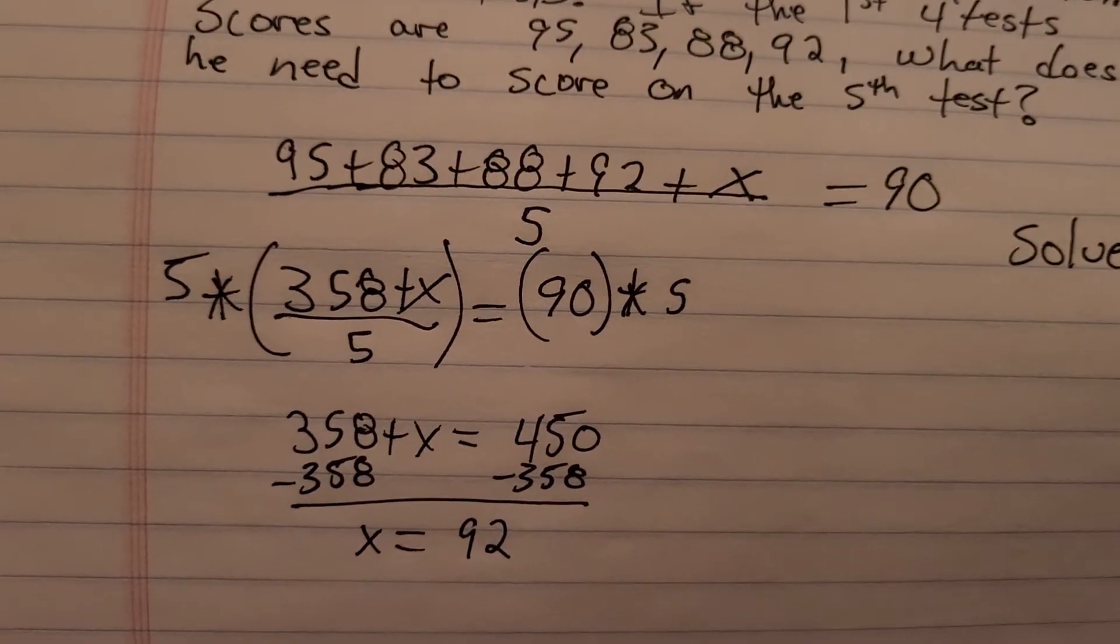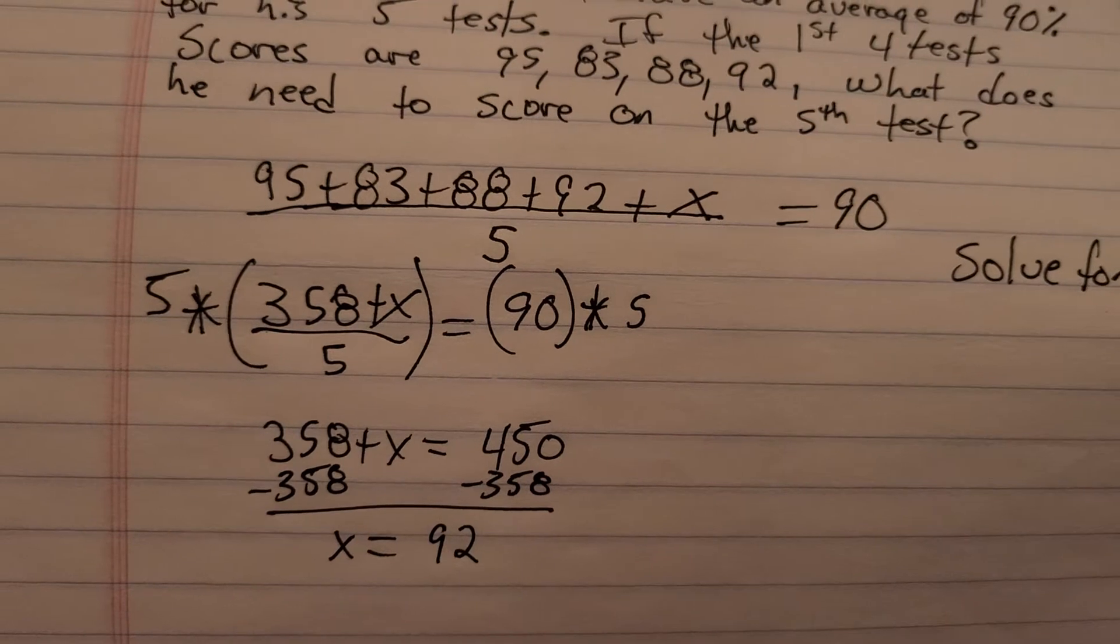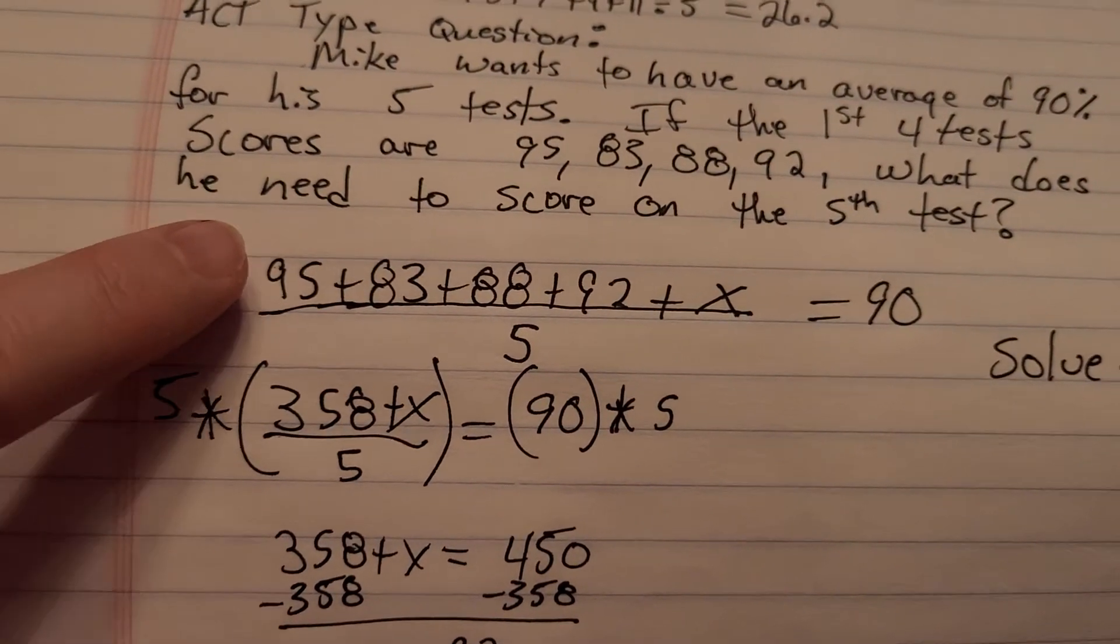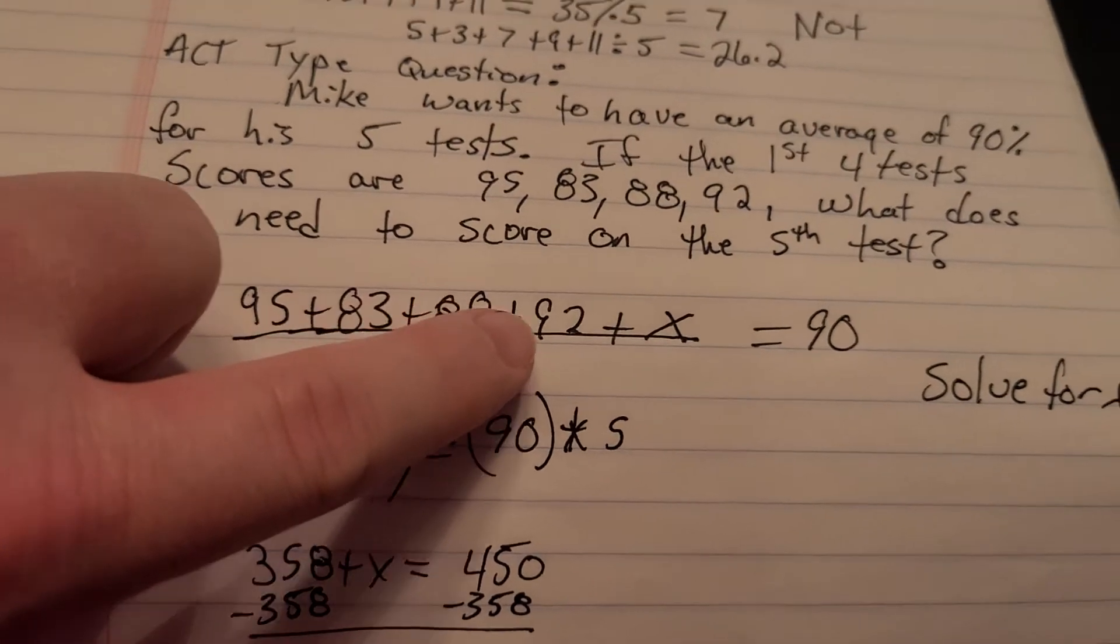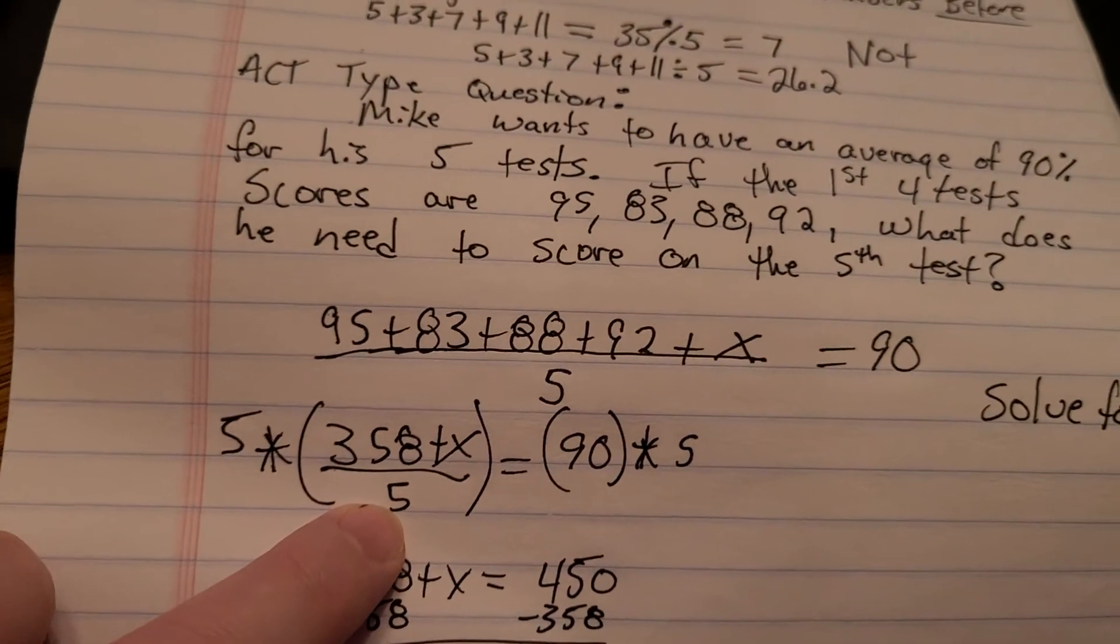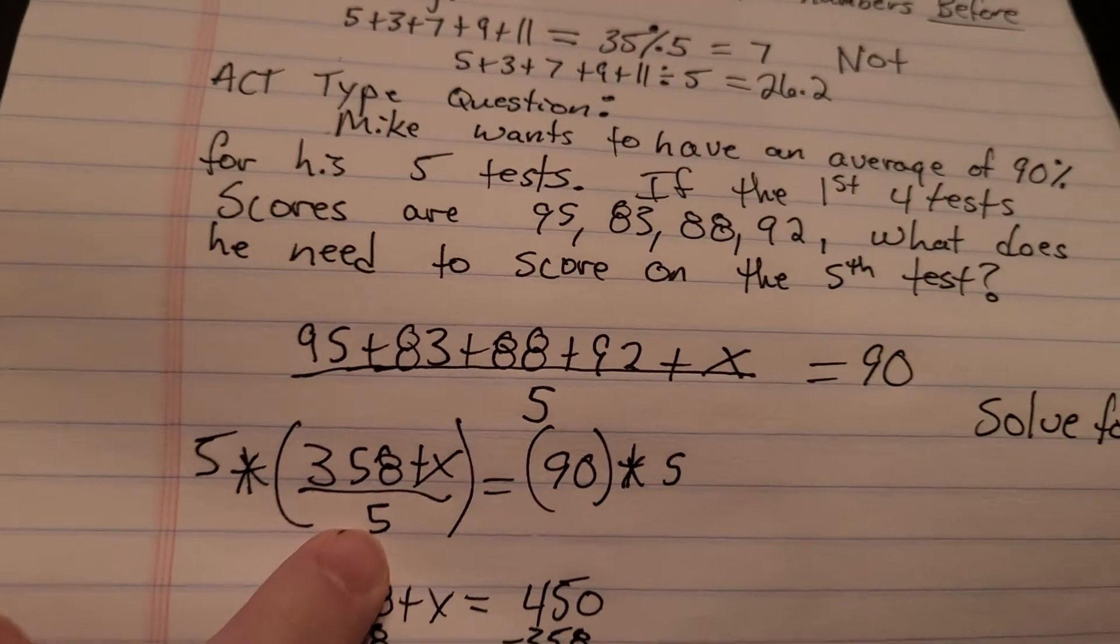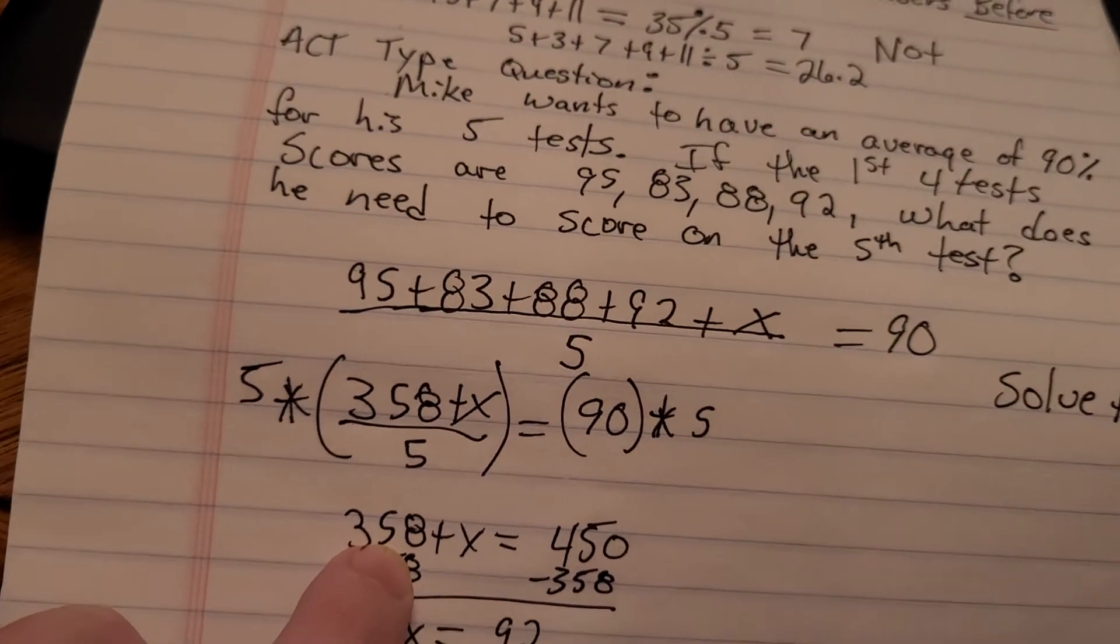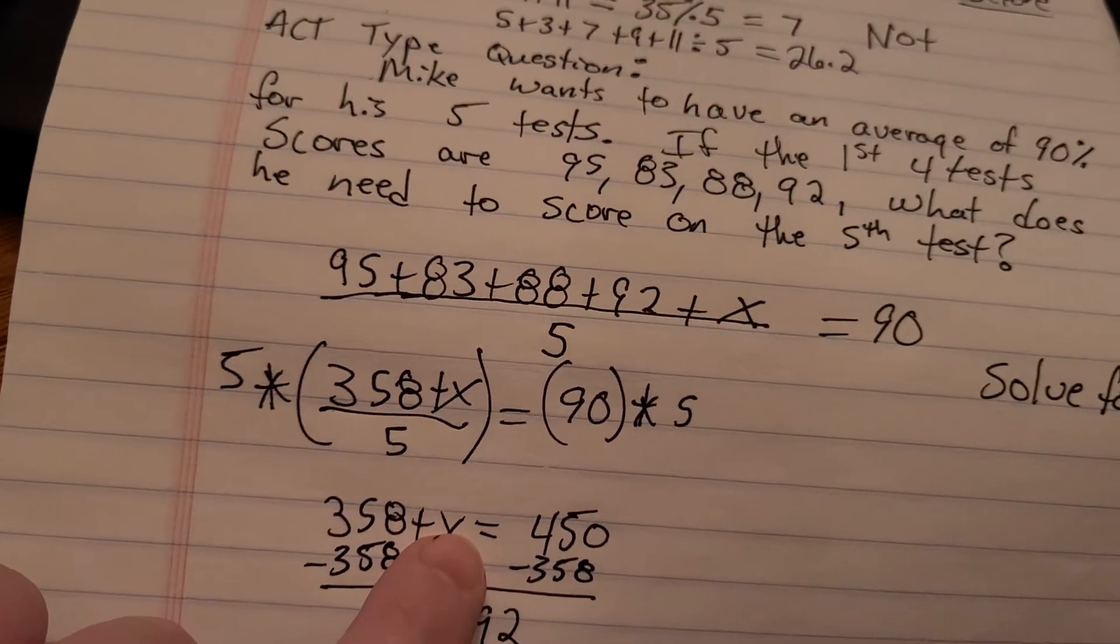But again, whenever they ask you one of these questions, what they're going to be doing is they're going to be expecting you to set up an equation like this. So you're going to add the numbers together plus the unknown value, so you have to multiply by whatever the denominator is, which is how many numbers there are, in order to then subtract the sum of what you've got to find out what you're missing.